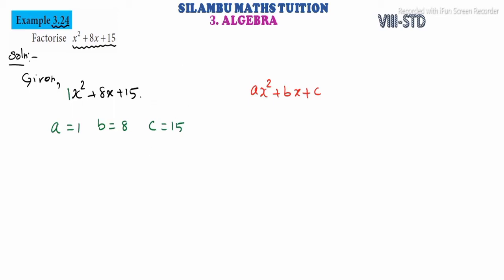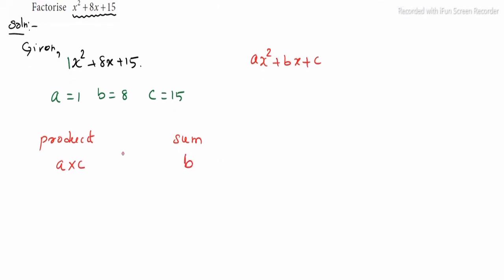In the sum, we have product and sum, we have two cases. Product is equal to ac is equal to 1x15 is equal to 15. Sum is equal to b is equal to 8.